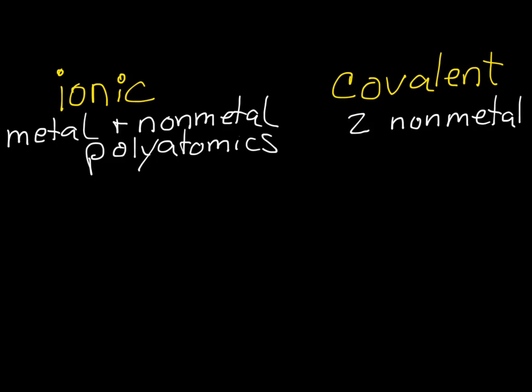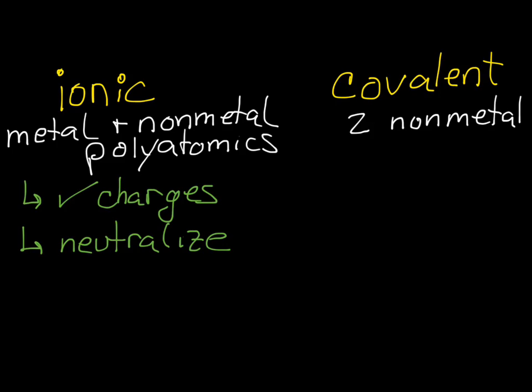If it's ionic, you need to check charges, and you need to neutralize charges. If it's covalent, you don't have to check charges or anything, just use prefixes to determine amount.